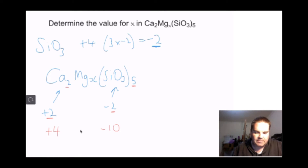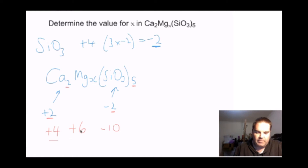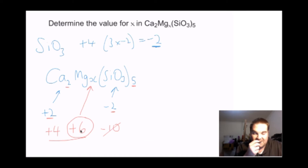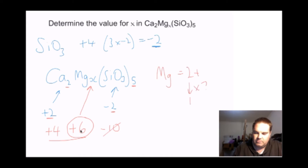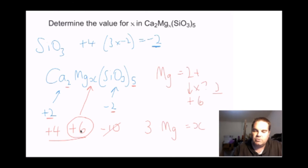Our calciums contribute plus 4 and our silicates contribute minus 10, so we need plus 6 in the middle. Plus 4 plus 6 equals plus 10, which cancels the minus 10. So our magnesiums must add up to plus 6. Each magnesium has a 2-plus charge, so 2 times 3 equals 6, meaning x equals 3. The formula is Ca2Mg3SiO3(5).